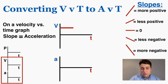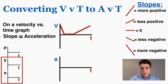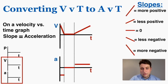It doesn't matter what velocity you're at — all that matters is the slope of the velocity graph. Here's a more complicated example where the slope starts very negative, goes to zero slope, and then becomes positive. The acceleration just starts negative, goes to zero, and then becomes positive. I'll draw those vertical lines to show you where those changes occur.